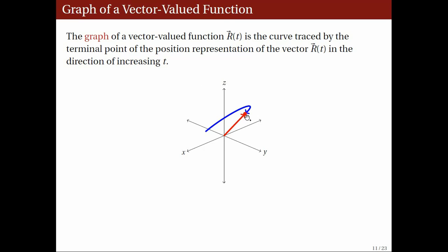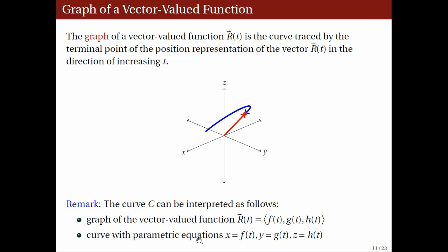Since the vector is in position representation, its initial point is (0, 0, 0). Since the components of the vector are f of t, g of t, and h of t, the coordinates of the terminal point are also f of t, g of t, and h of t. Thus, the curve traced out by the terminal points is the parametric curve with parametric equations x equals f of t, y equals g of t, and z equals h of t. Hence, the graph of the vector-valued function r with components f, g, and h is precisely the same as the curve with those parametric equations.